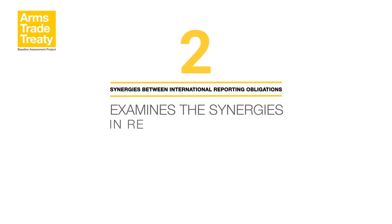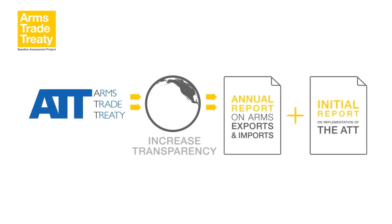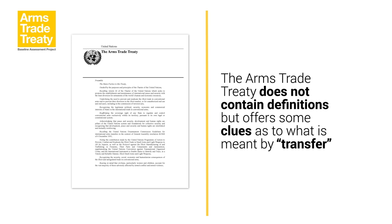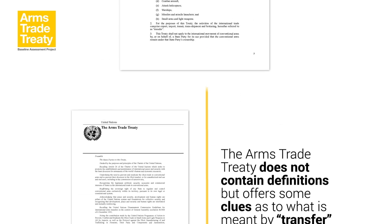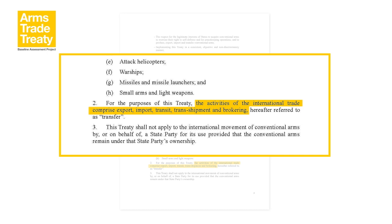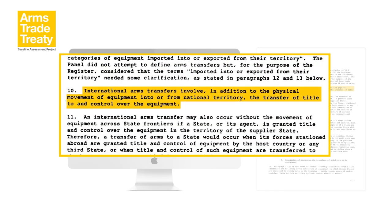This module examines the synergies in reporting under the Arms Trade Treaty and the United Nations Register of Conventional Arms. A key objective of the Arms Trade Treaty is to increase transparency in the global arms trade by requiring states to submit annual reports on arms exports and imports in addition to an initial report on treaty implementation. The Arms Trade Treaty does not contain definitions, but the treaty text offers some clues as to what is meant by transfer and what kinds of activities are exceptions to the treaty. In the ATT, transfer is described as: the activities of the international trade comprise export, import, transit, transshipment and brokering.